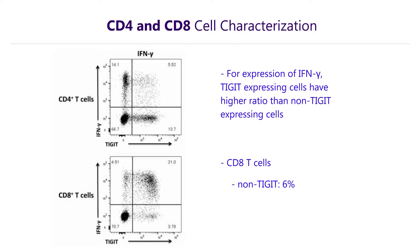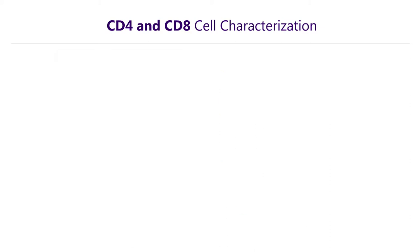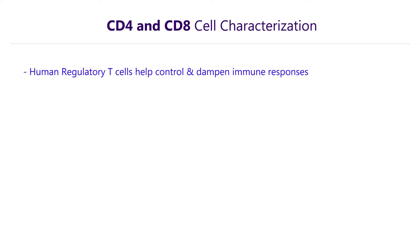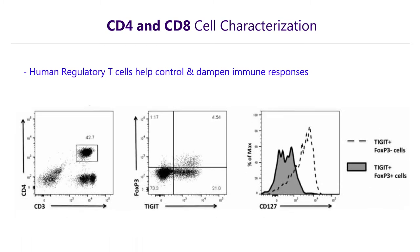On the other hand, for TIGIT positive cells, a whopping 85% of cells express interferon gamma. We also characterized human regulatory T-cells, which can help control and dampen immune responses. A majority of the FOXP3 expressing T-regs in our study also expressed TIGIT, and this corresponded to low CD127 expression.